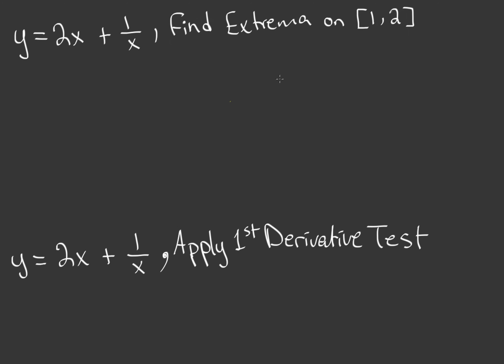What we're going to do here is find the extrema on a certain closed interval. We're going to apply the first derivative test to find our relative mins and maxes, then apply the second derivative test to confirm them. We're also going to describe our intervals — whether they are increasing or decreasing, and whether they are concave up or concave down.